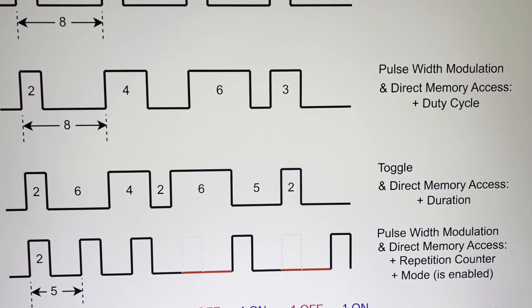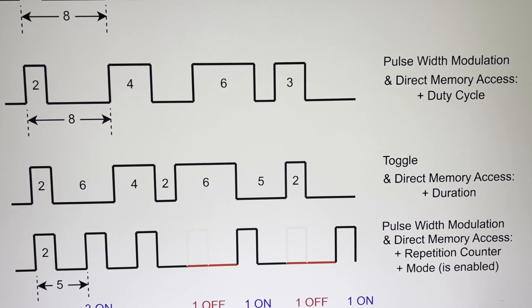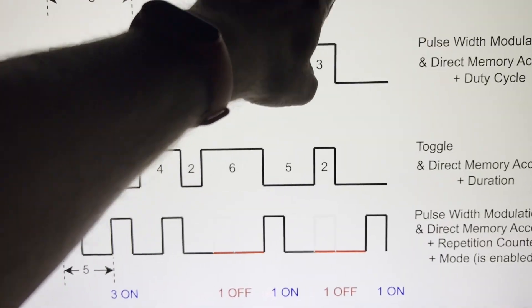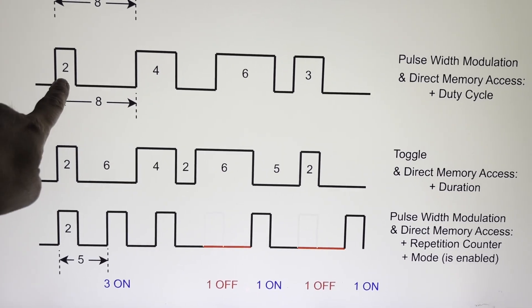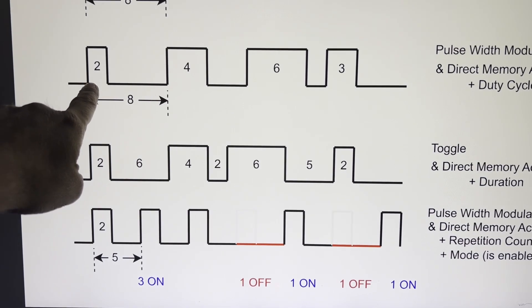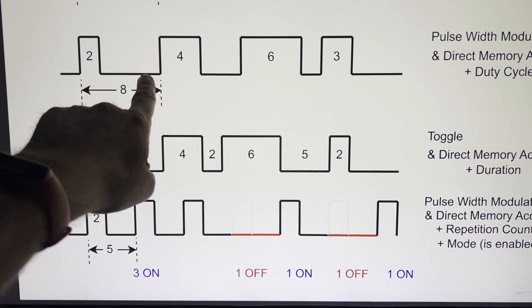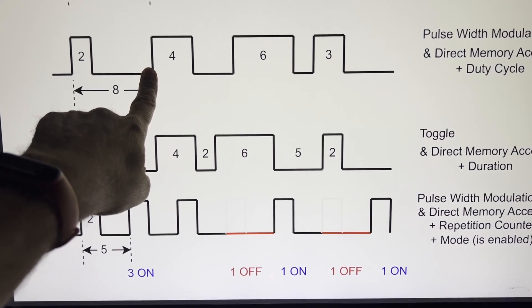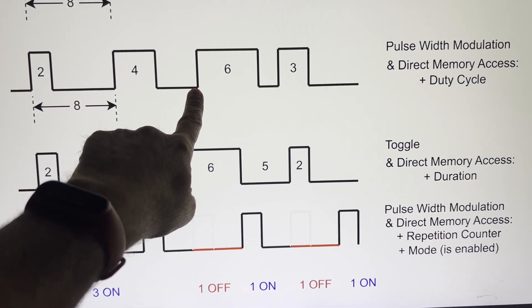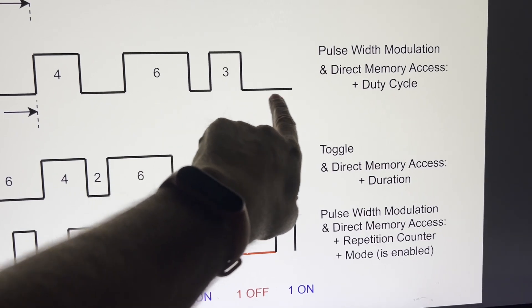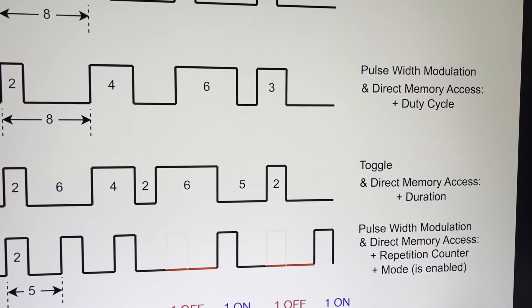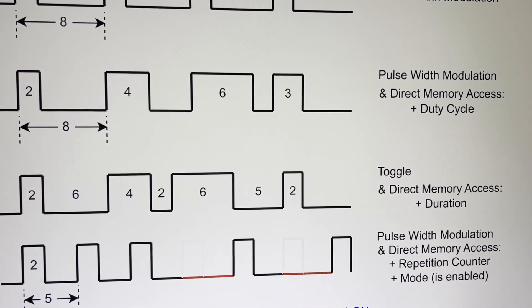Next, we have pulse width modulation plus direct memory access, and our direct memory access is changing our duty cycle. So the duty cycle up here was two. It was 25% of the time we're on, so that's called the duty cycle. On this one, you can see that we're always pulses of eight, pulses of eight. But our duty cycle is changing. So here we were using two, and then turning off. And then here, we used direct memory access to change that register and make it a four instead. And we were four, and then we were off. And then here, we changed it with direct memory access to a six, and then we were off. And then three, and then we were off. So using direct memory access, you can change any register, any of these settings, including GPIO pin output, and all kinds of stuff. But we're using this to change our duty cycle.